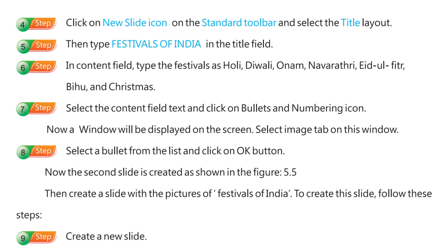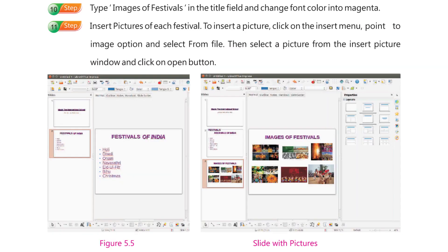Then create a slide with the pictures of festivals of India. To create this slide, follow these steps. Step 9: Create a new slide. Step 10: Type 'Images of Festivals' in the title field and change the font color to magenta. Step 11: Insert pictures of each festival. To insert a picture, click on the Insert menu, point to Image option, and select From File. Then select a picture from the Insert Picture window and click on the Open button.